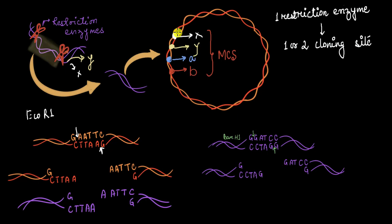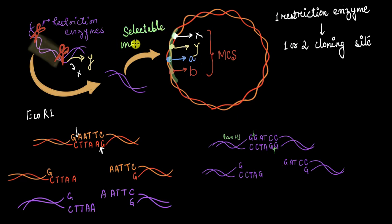This multiple cloning site in a vector is always located inside of a selectable marker gene. Why it is inside a selectable marker gene is a very interesting concept that we will cover in a different video. For now, just remember that one vector has multiple sites that can be cleaved by different restriction enzymes, into which we can put the gene that we want, and that this site is located inside of a selectable marker gene. With multiple cloning sites available, you can go ahead and clone any gene you want, because the restriction enzyme you use to cut your gene will likely have a corresponding site in the vector.